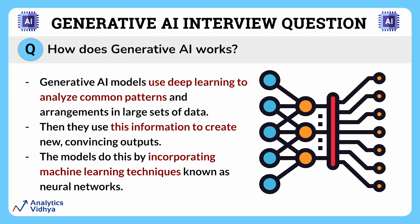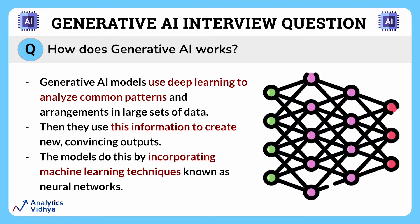How does generative AI work? Gen AI models use deep learning to analyze common patterns and arrangements in large sets of data, then use this information to create new convincing outputs. Deep learning is a complex process of computing that entails neural networks, which are deeply inspired by the way the human brain processes, interprets information, and learns from it over time.